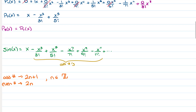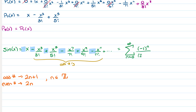So if I want to write sine of x as a series, it's going to be sigma from n = 0 to infinity. It alternates positive, negative, positive, negative, so I need a factor of (−1)ⁿ. The question is: do I start positive or negative? I start positive, so I want (−1)ⁿ, not (−1)^(n+1).